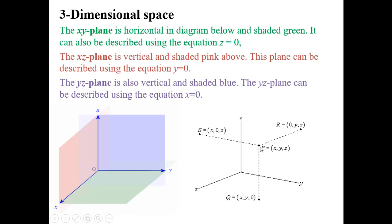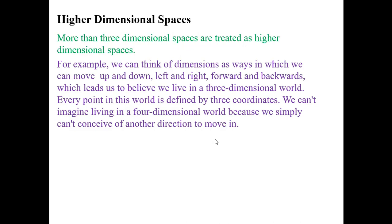Consider a point P in three-dimensional space with coordinates (x, y, z). When you take the projection of P onto the XY plane, you get point Q, whose z-coordinate becomes 0 while x and y remain the same. Similarly, the projection onto the YZ plane makes the x-coordinate 0, and the projection onto the XZ plane makes the y-coordinate 0.